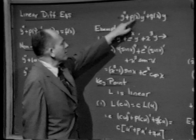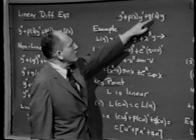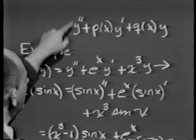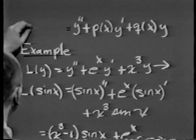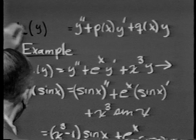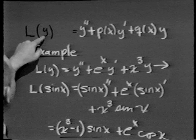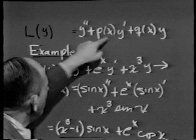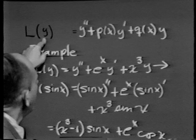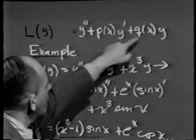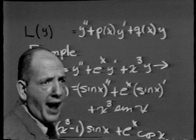Let's look at y double prime plus p of x y prime plus q of x y. I can think of this as a function machine where the input is y. The machine is told: whatever y comes in, differentiate it twice, add on p of x times the first derivative plus q of x times the function, and that will be the output. I call the machine the L machine to emphasize the word linear. The domain of L is functions which are twice differentiable.